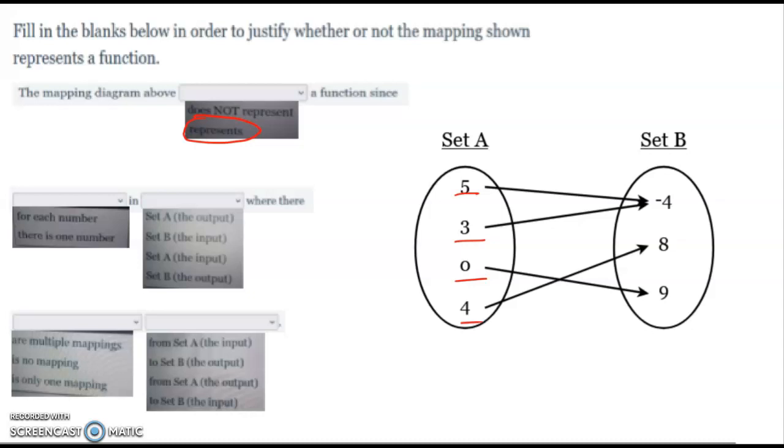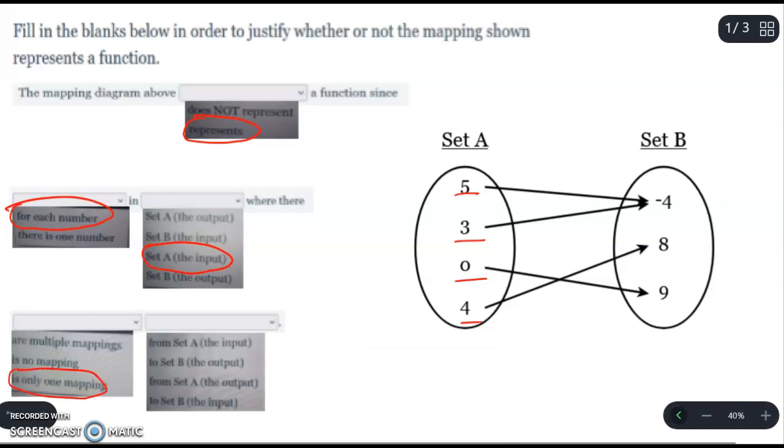And then next, we want to say, okay, for each number Set A, the input, there's only one mapping, which is the line being drawn from the number to the output Set B, the output. And that's it.